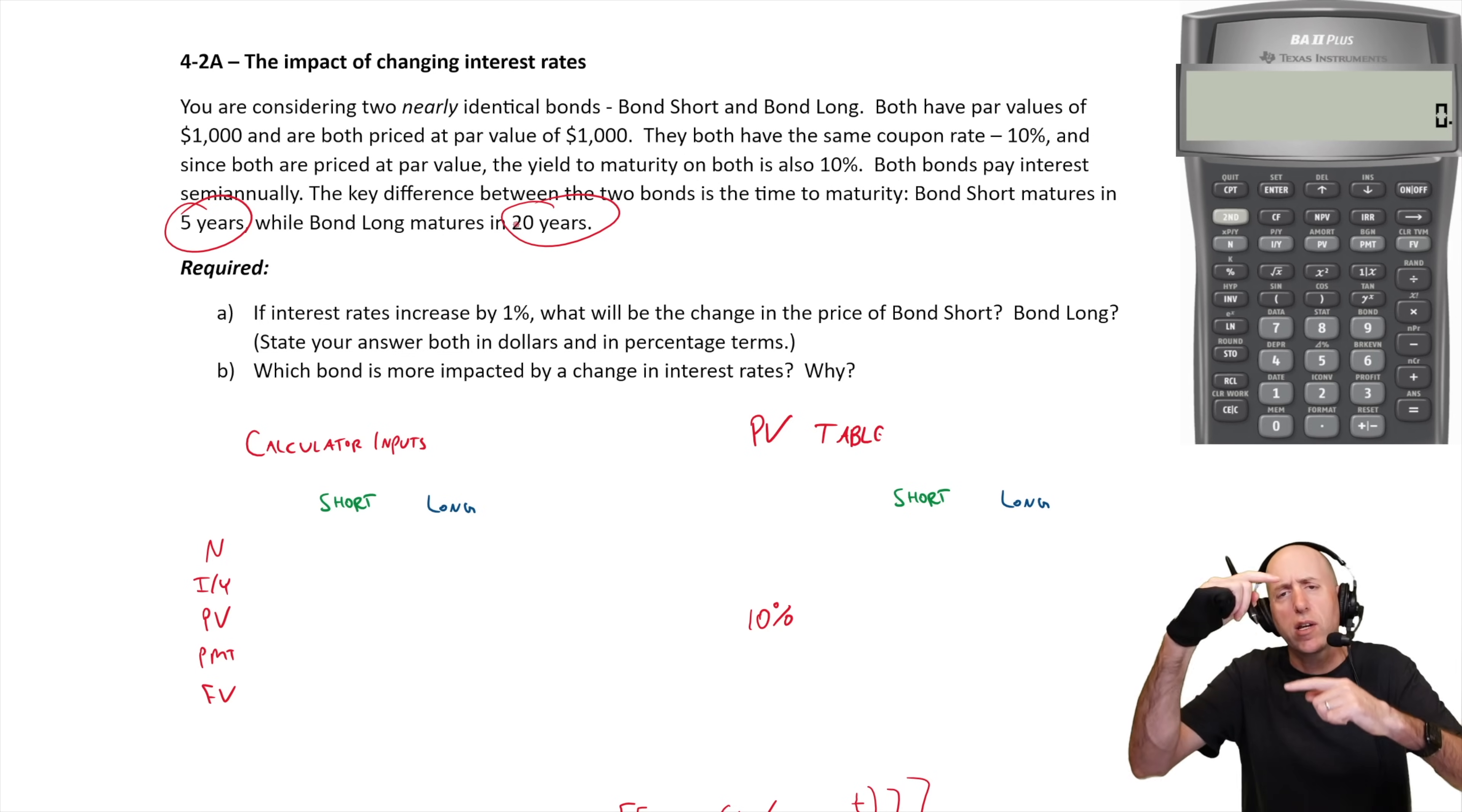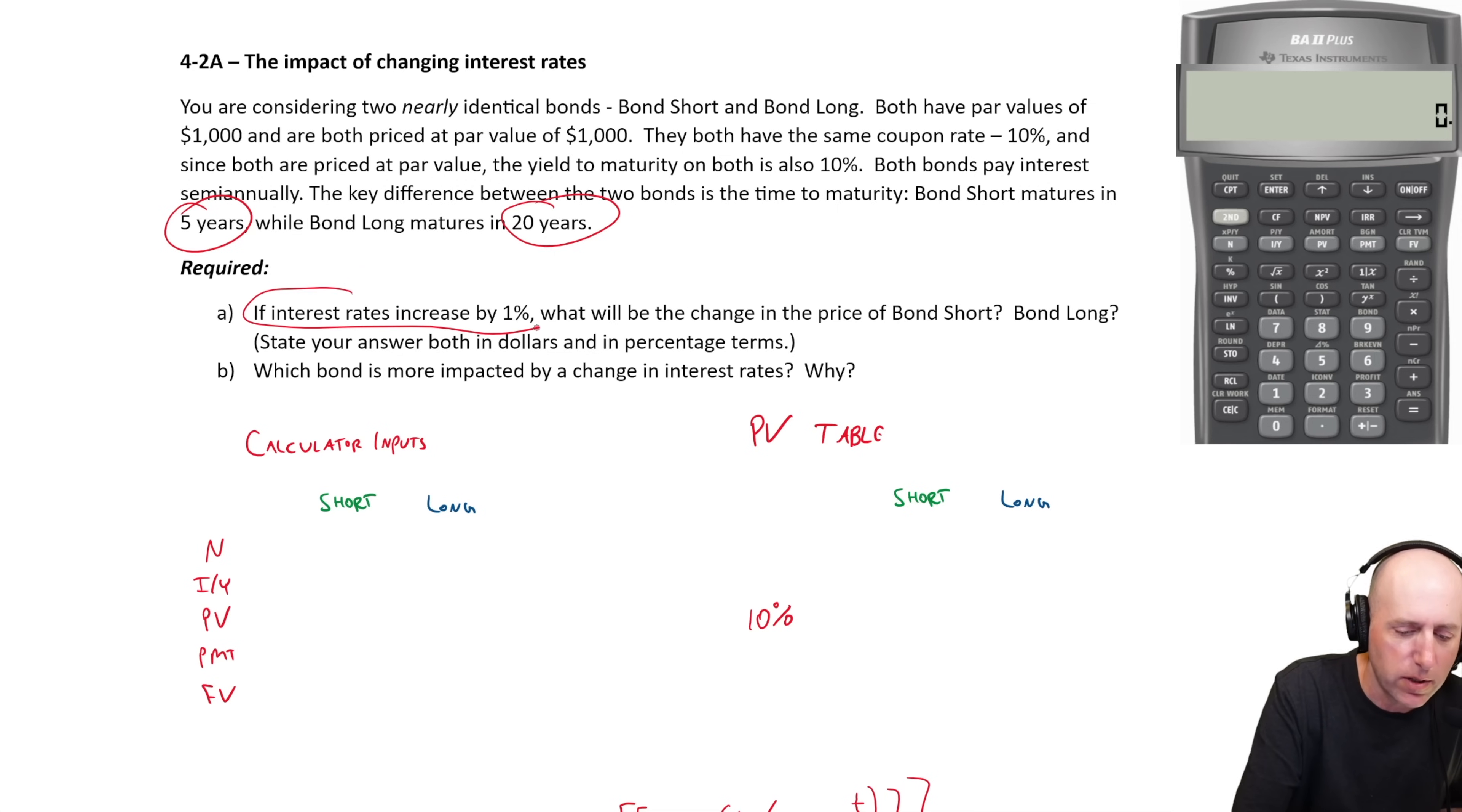If there's an interest rate fluctuation, how does it impact the bond? If the interest rates in the market increase by one percent, the Fed increases the interest rate or something like this, so the market rate of interest goes up by a percent, what does it do to our bond price?